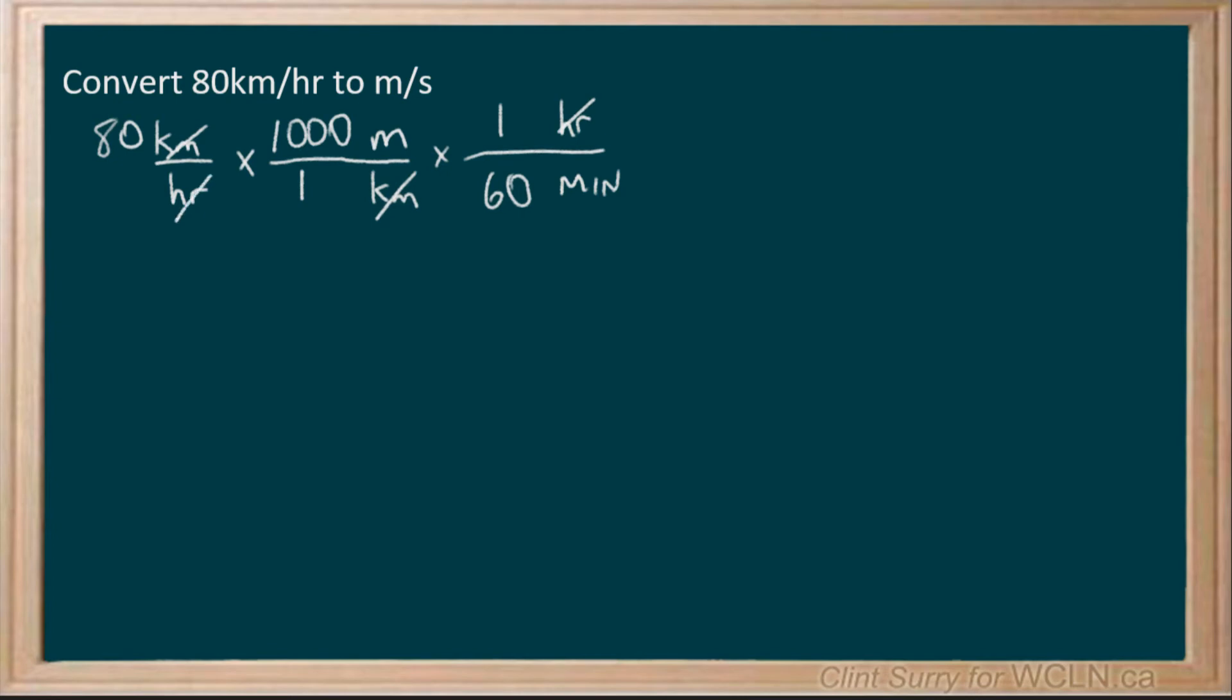Now I can see I'm in meters per minute, but that's still not where I want to be. I multiply by one more conversion factor, putting minutes on top, seconds on the bottom. Minutes are larger, so there are 60 seconds in one minute, and I end up being able to cancel out the minutes.